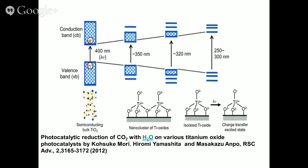If you take the bulk semiconducting titanium dioxide, you can clearly see the valence band and the conduction band and the band gap. Here the wavelength that has to be used depends upon whether it is rutile or anatase, with a band gap value of 3.0 to 3.2 electron volts for the photons to be absorbed. Now if I were to take this bulk semiconductor and go to nano clusters — a few hundred to a few thousand angstroms — the band gap increases.